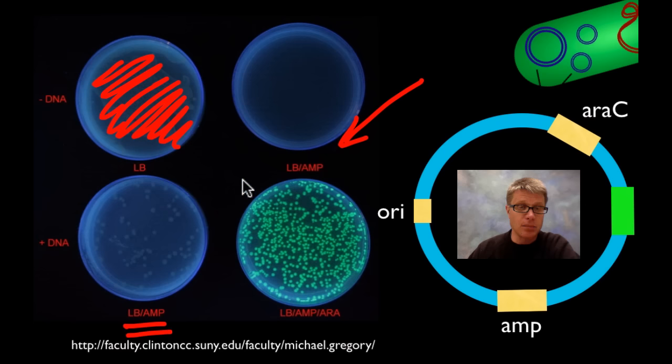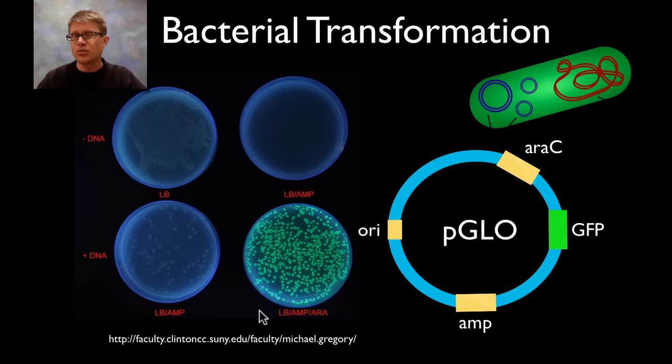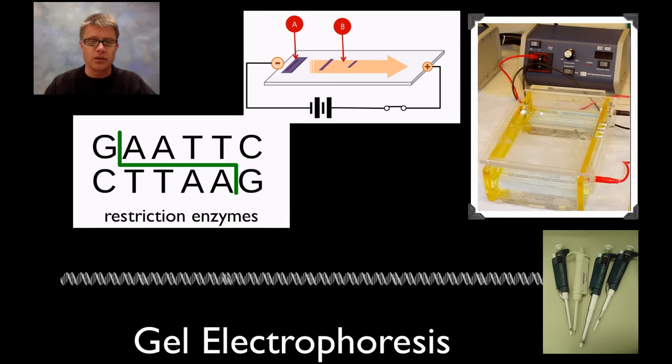Likewise on the ones who have the LB and the ampicillin, the ones that are transformed we're going to see some colonies. So each of these colonies represent one bacteria that picked up the plasmid. It's able to make copies of itself and it's able to grow. So you can see not a ton of them were able to do that. But then finally we get the really cool plate where we've got LB ampicillin. So all these bacteria were transformed. But we also have that arabinose sugar. So they're able to use that to produce this glowing protein. And so you get this fluorescence in the bacteria. So what do you need to understand? What a plasmid is, how it transforms bacteria, and then how that might be manifested in all the different growth on all the different plates.